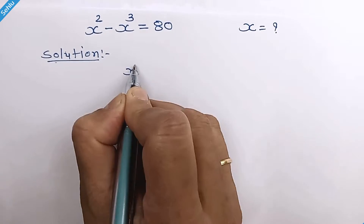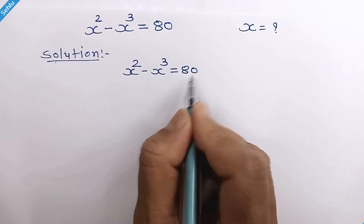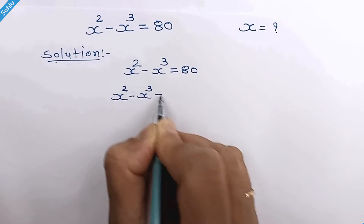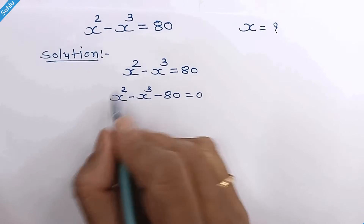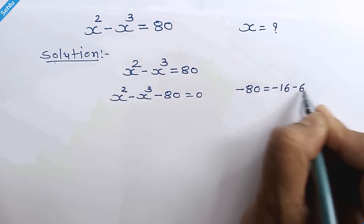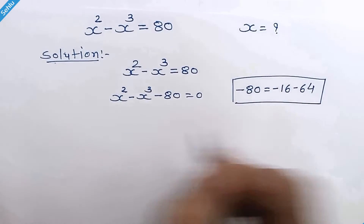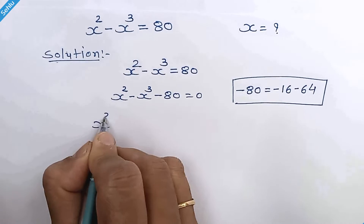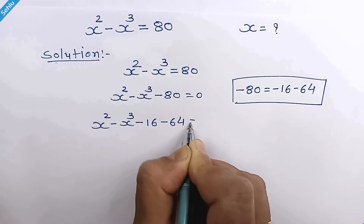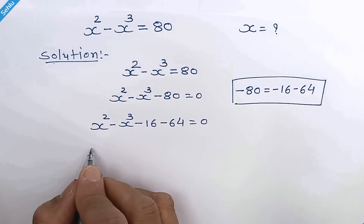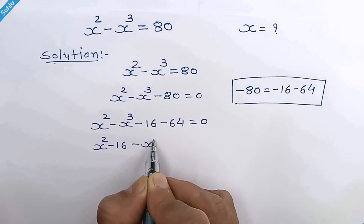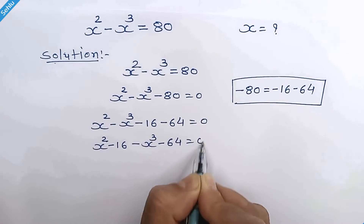Our question is, we will move this to the LHS. Now how do we factorize this equation? Negative 80 can be written as negative 16 and negative 64. So let's rearrange this equation. It will be x squared minus 16 minus x cubed minus 64 is equal to 0.